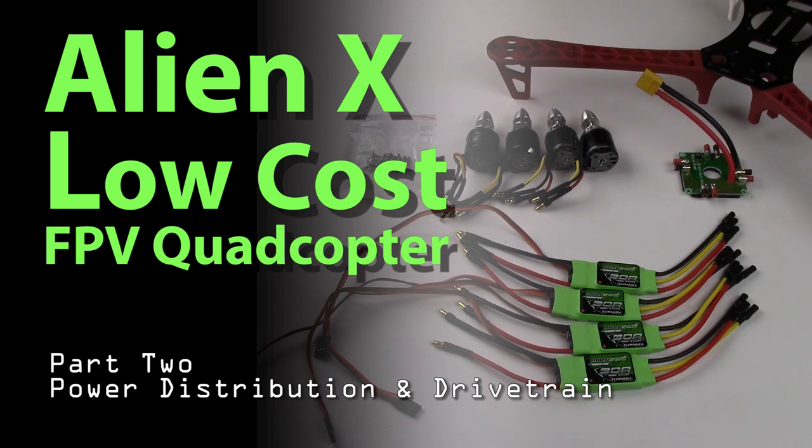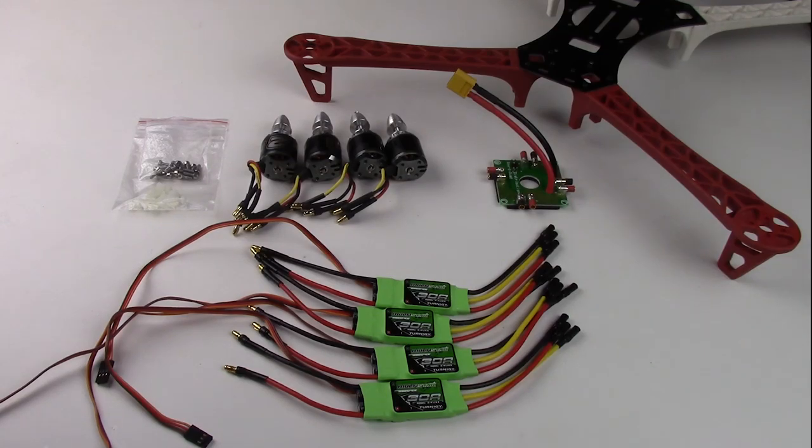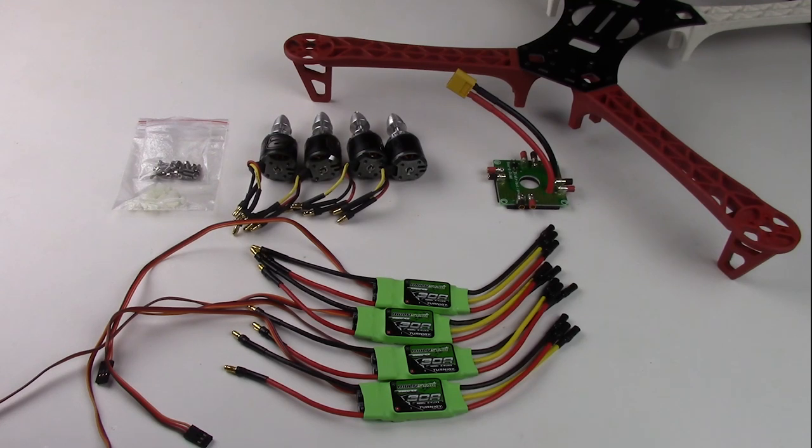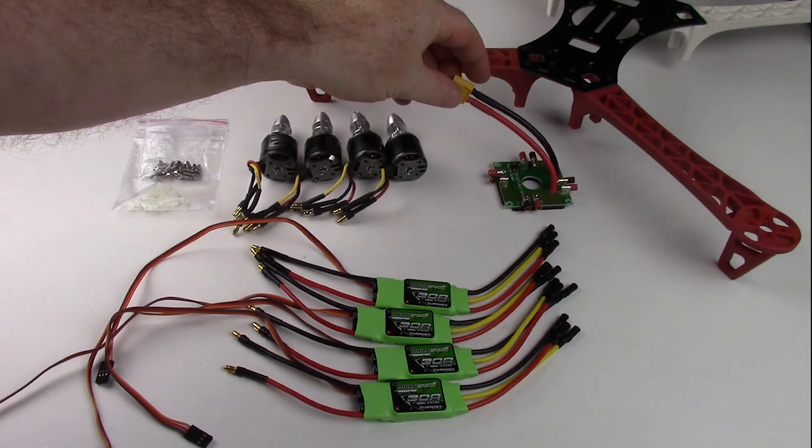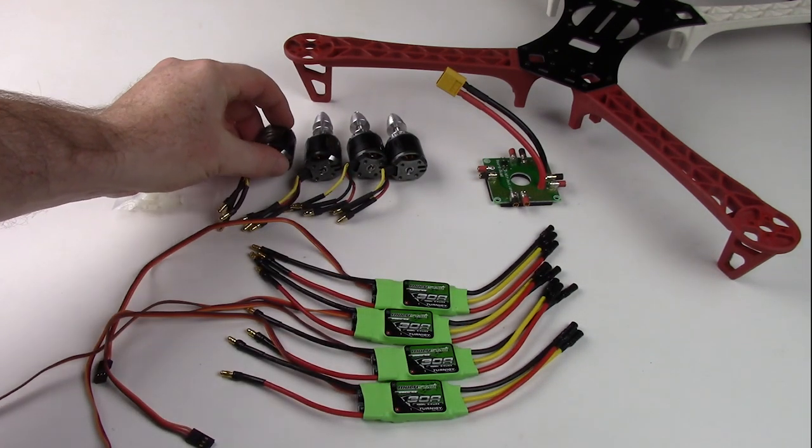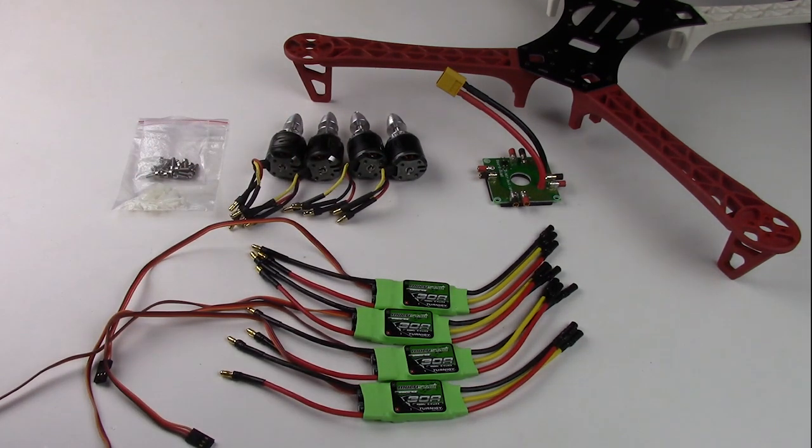So this is video two in my series of how to build a low-cost FPV quadcopter. If you haven't watched the first video in the series on how to assemble the newer Alien X quadcopter frame, click the link in the description and go watch that video first. This video number two is going to be about putting together the drivetrain system. Specifically, we're going to talk about power distribution, ESCs, and motors and how to assemble those onto the newer frame.